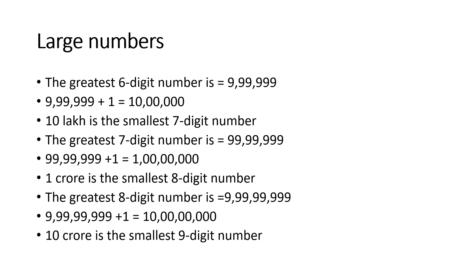1 crore is the smallest eight digit number. The greatest eight digit number is 9 crore 99,99,999. If we add one to this, we get 10 crore. 10 crore is the smallest nine digit number. Crore and lakh are the names we use in the Indian system of numeration, and there are two types of numeration systems.